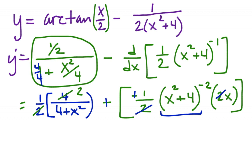So what do I have here? 2 over 4 plus x squared, plus x over (x squared plus 4) squared. Isn't that the same as 4 plus x squared?